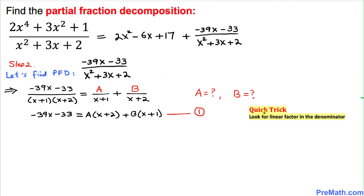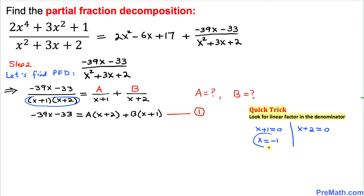Here is our quick trick: look at the linear factors in the denominator and set each equal to zero. So x + 1 = 0 gives x = −1, and x + 2 = 0 gives x = −2.